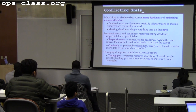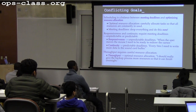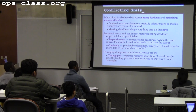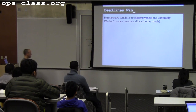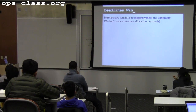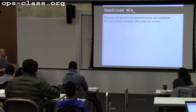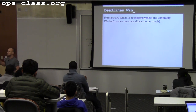Throughput is the idea of putting all the resources of the machine to work to the greatest degree possible — maximizing CPU cycles, memory, and disk usage. Throughput directly pushes against responsiveness and continuity. Humans are sensitive to interactivity: you have no idea whether your system is optimally allocating resources for throughput, but you are very sensitive to responsiveness and continuity.